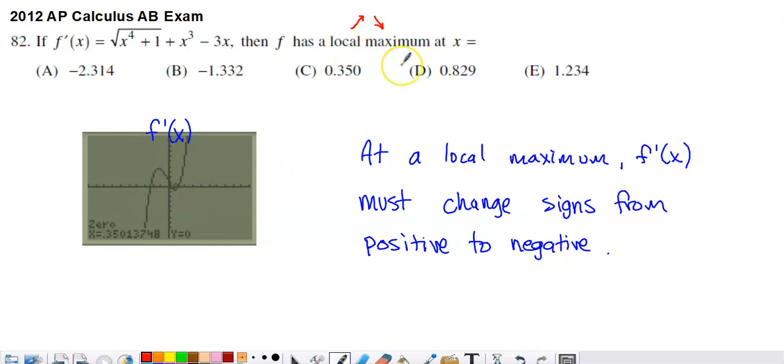So what happens at a local maximum with the derivative? Well, the derivative is positive whenever the function has positive slopes, but then the derivative turns to negative on the other side of the maximum. So at a local maximum, f prime is going to change from positive to negative. So I'm looking at this graph, keeping in mind that it is a graph of f prime.